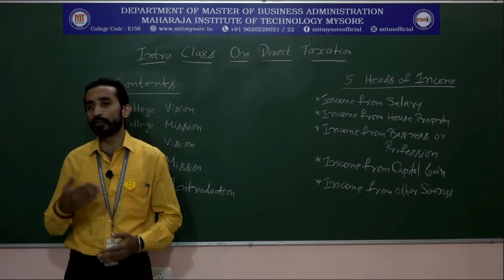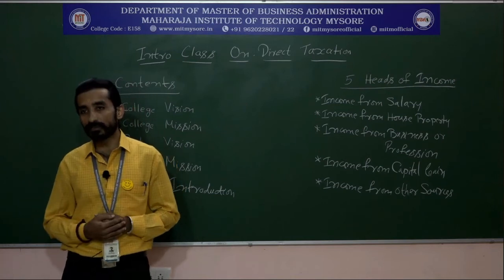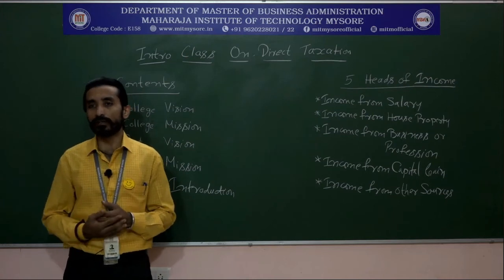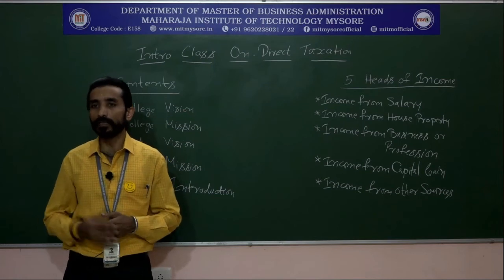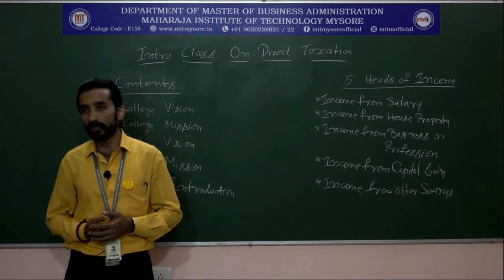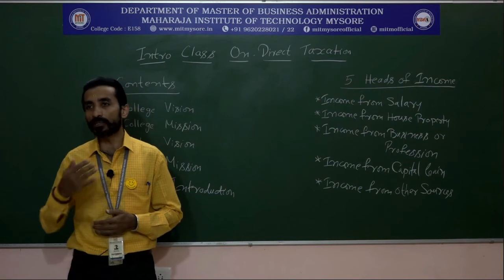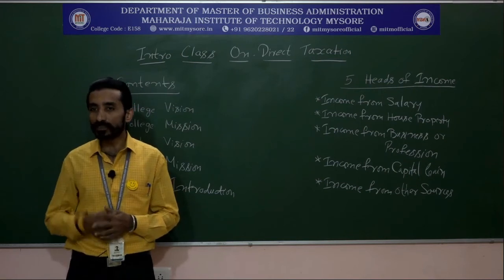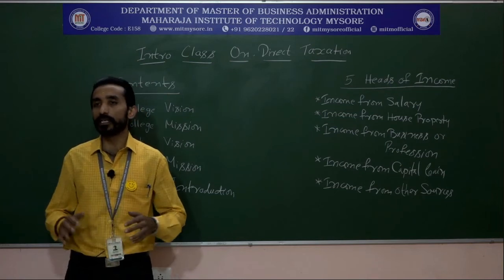Unit 5 covers the permissible deductions under Section 80C and 80U, which are essential for computing income at any level. This unit also includes the computation of tax liability of an individual. Set-off and carry-forward of losses are discussed theoretically in Unit 5 as well.